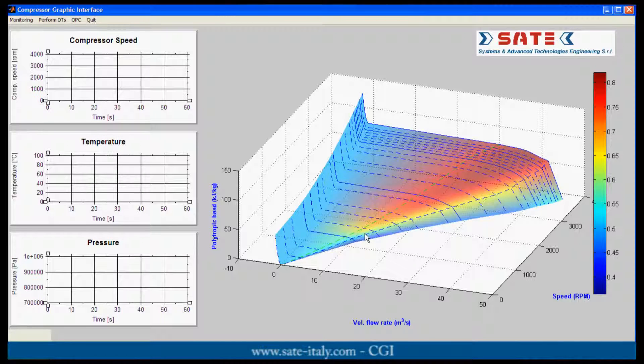When the UDP connection is started, we can see the operating point displayed in red on the map. The CGI is now waiting data from the plant data acquisition system.